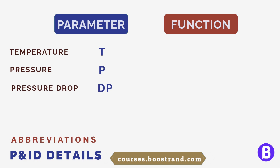For level it shall be L, for flow it shall be F, and so on. If this is a temperature gauge that measures the temperature locally, then the second letter shall be G, so the instrument abbreviation shall be TG.